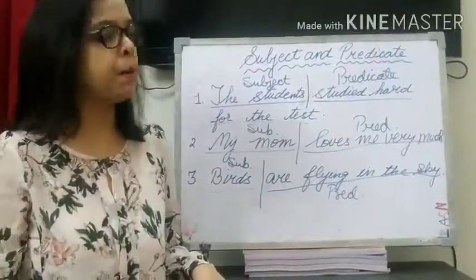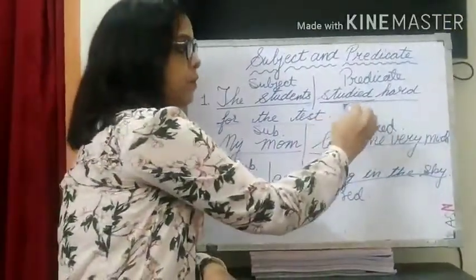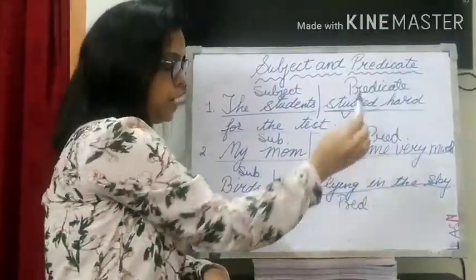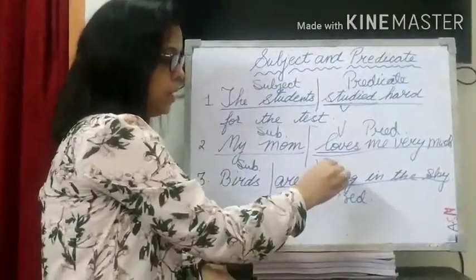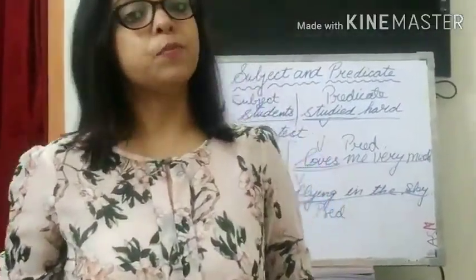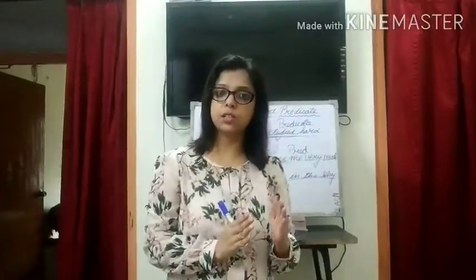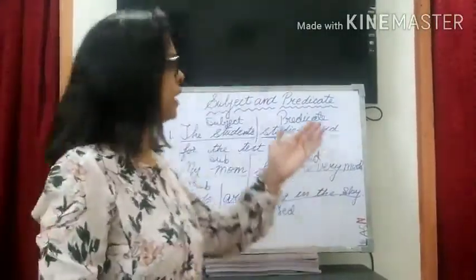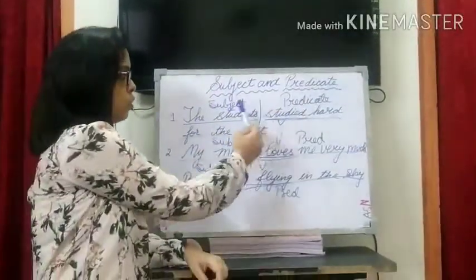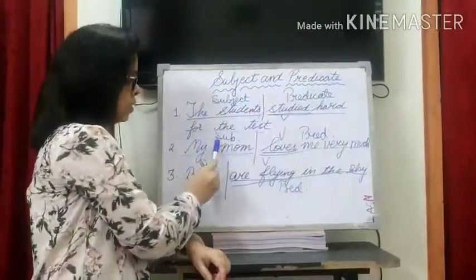Remember children, the verb always comes in the predicate part. 'Studied' is the verb — it comes in the predicate. 'Loves' is the verb — in the predicate part. 'Are flying' is the verb — it is in the predicate part. So a sentence has two parts: the subject, which is the part that mentions who or what, and the predicate, which says something about the subject. In these sentences the subject has come before the predicate.